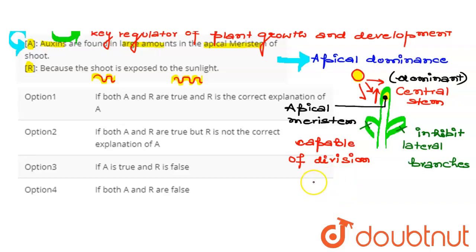So see the options. First option says: if both A and R are true and R is the correct explanation of A. So this option is wrong because reason is not the correct explanation of assertion.